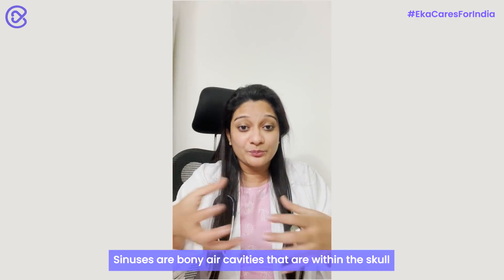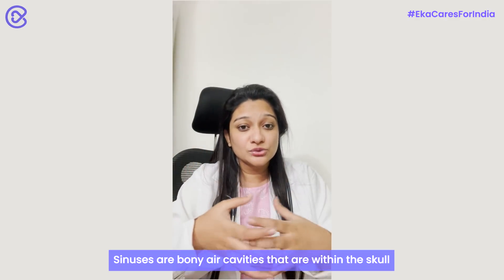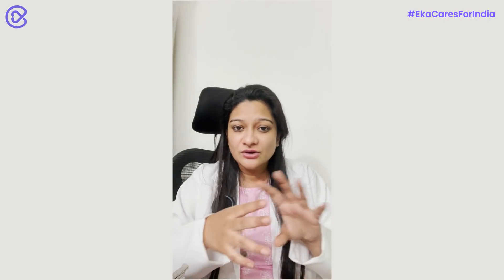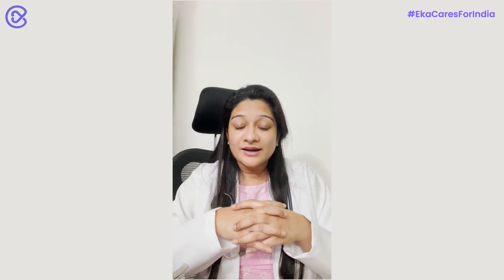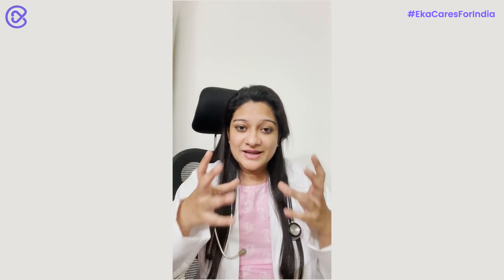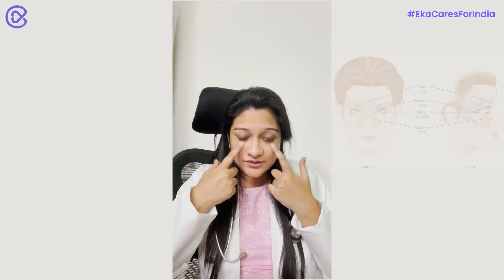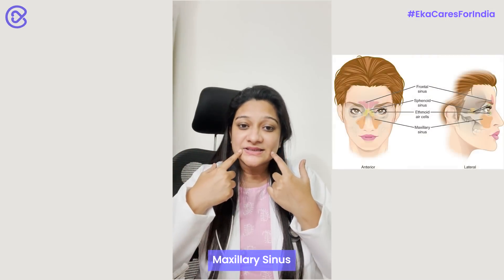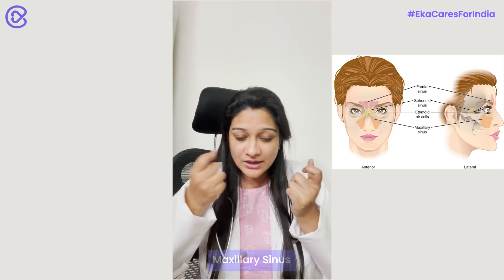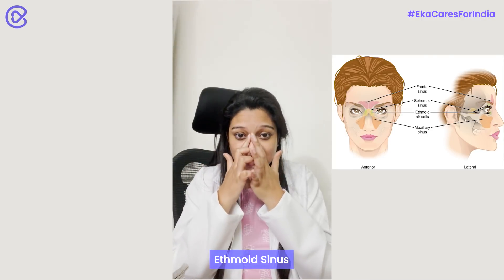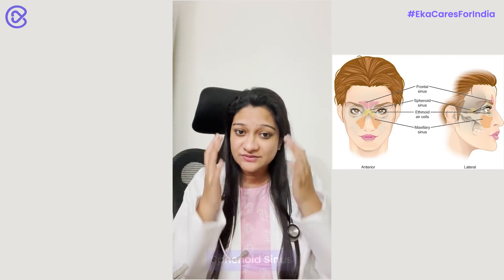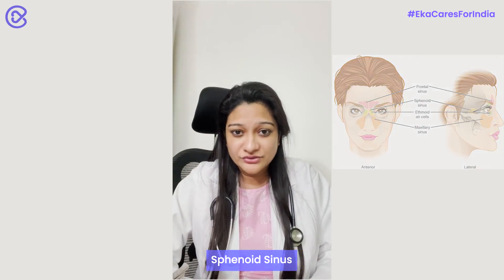These cavities are present to serve specific functions. All of us tend to have four pairs of sinuses in our skull, and they are all placed in very specific places. The maxillary sinus would be somewhere here, the frontal sinus would be here, the ethmoid sinus is here, and the sphenoid is a little at the back of the skull.